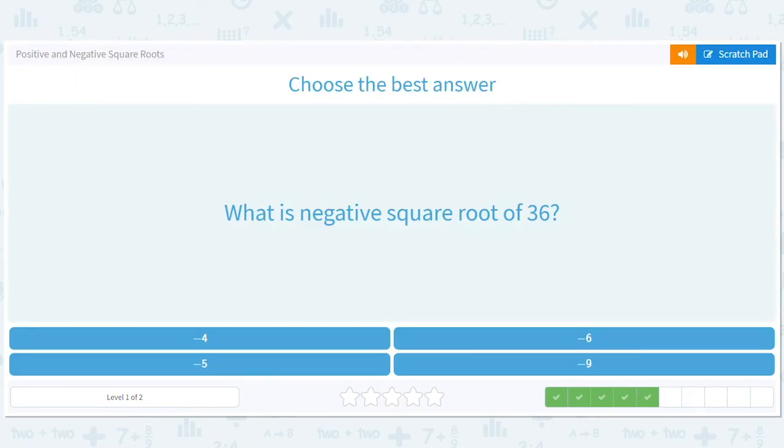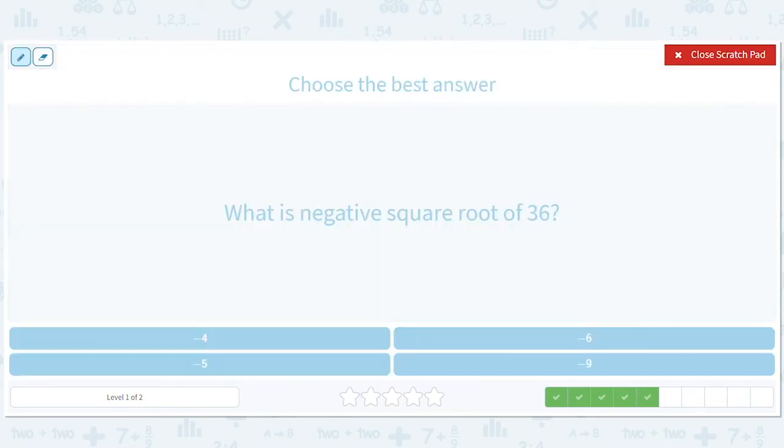How about this negative square root of 36? 6. Okay. 6 times 6 is 36, so negative 6.